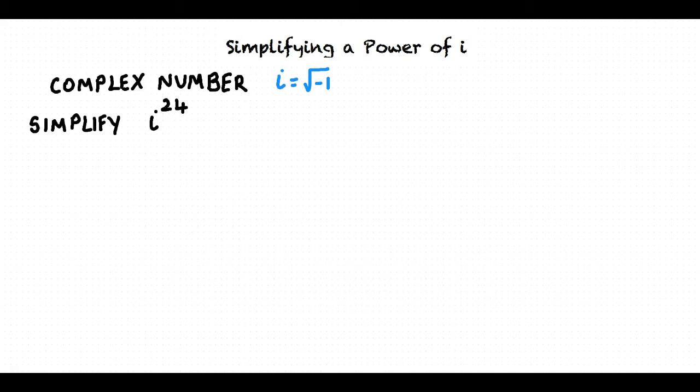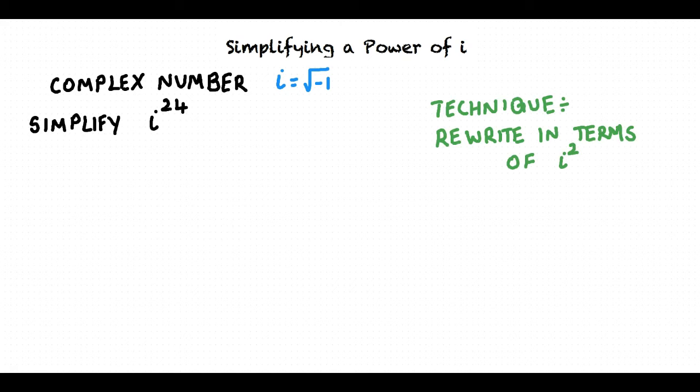Let's say we are required to simplify the expression i raised to the power 24. The technique we follow is to rewrite the expression in terms of i squared instead of i. Why do we do that? We know that the value of i is the square root of negative 1. From this, we can evaluate i squared.